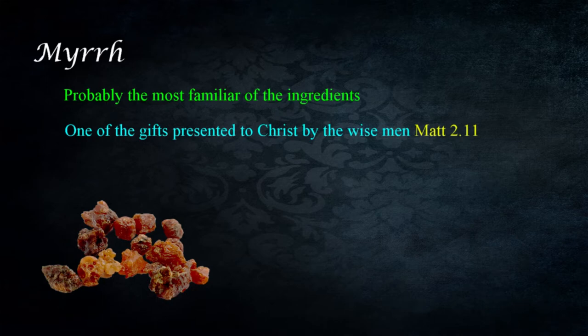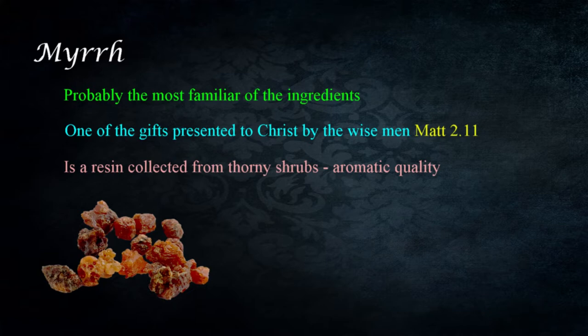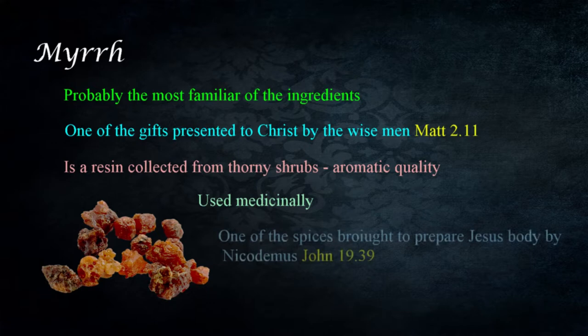Myrrh is probably the most familiar of these ingredients, as it was one of the gifts presented by the wise men for Jesus. Myrrh is a resin collected from certain thorny shrubs and has an aromatic quality. Myrrh was also used medicinally and was one of the spices brought by Nicodemus to prepare Jesus's body in the tomb, in John 19:39.